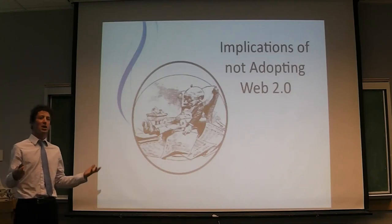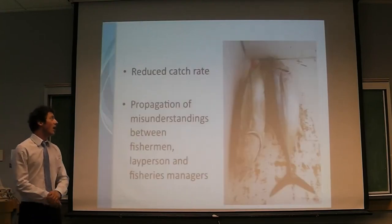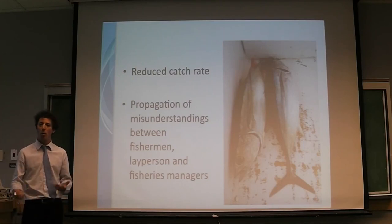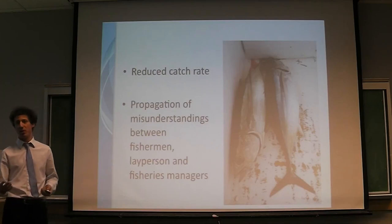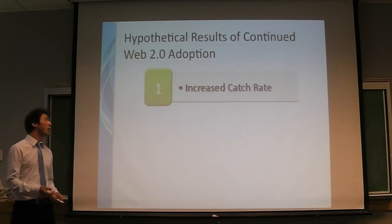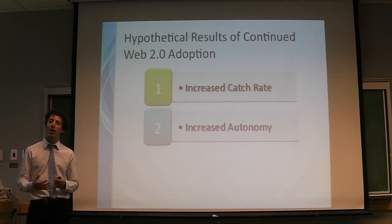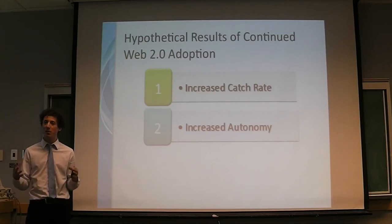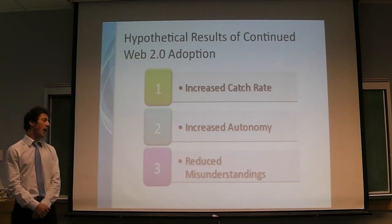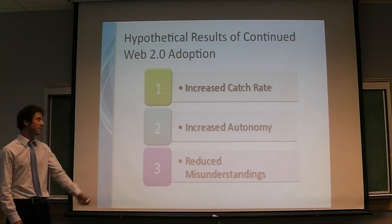So what happens if we don't adopt more Web 2.0 attributes in commercial albacore tuna fishing? I propose there will be reduced catch rates and more misunderstandings between the layperson, the fisherman, and fisheries managers. If we do adopt more, we will see increased catch rates, increased autonomy — mainly in the form of cooperatives between fishermen which could then control the price of the fish sold — and reduced misunderstandings through greater information sharing. Thank you.